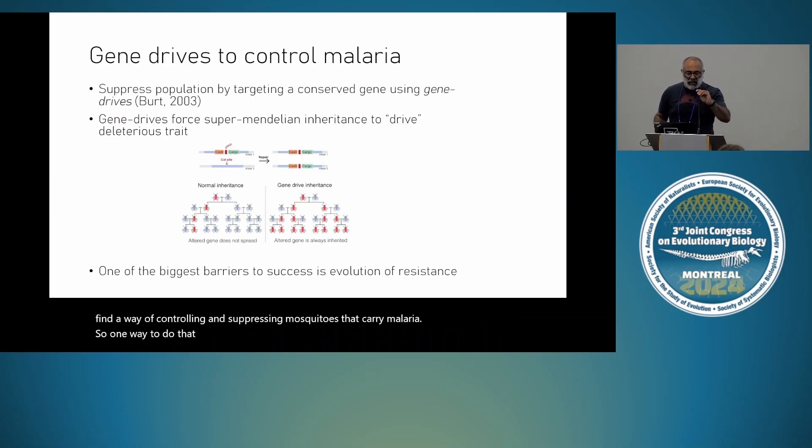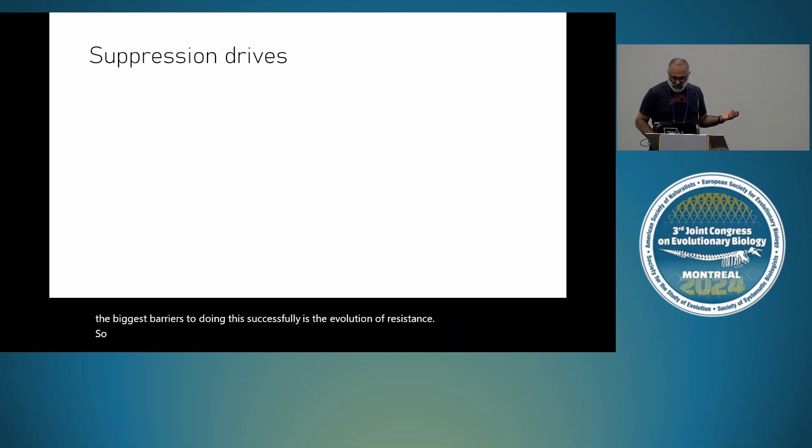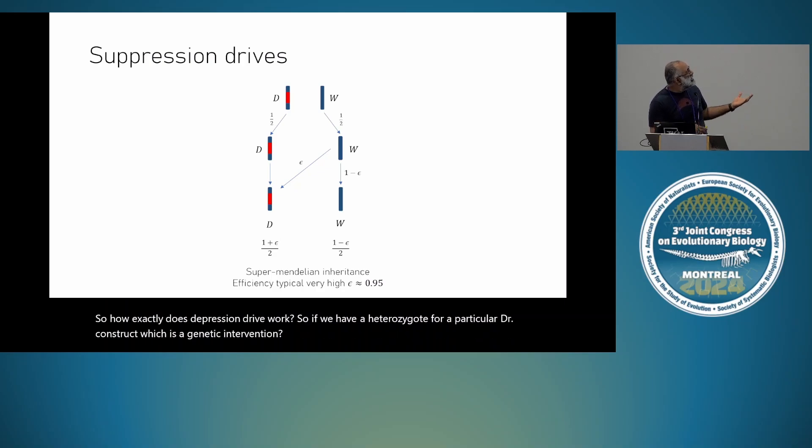One way to do that is by using suppression gene drives, which were thought of by Austin Burt a few years ago. Gene drives basically force super-Mendelian inheritance onto using a trait which is deleterious into a population. How exactly does the suppression drive work? If we have a heterozygote for a particular drive construct, which is a genetic intervention, normal Mendelian inheritance would give you half-half gametes, but the drive acts to cut this wild type, and then it's repaired by homologous direct repair to turn it into a drive. So a very large fraction of the gametes that are produced are this drive type. And so even if it's deleterious, it's driven into the population.